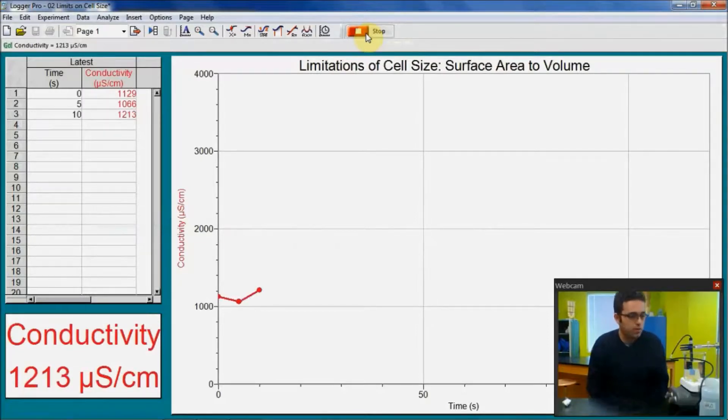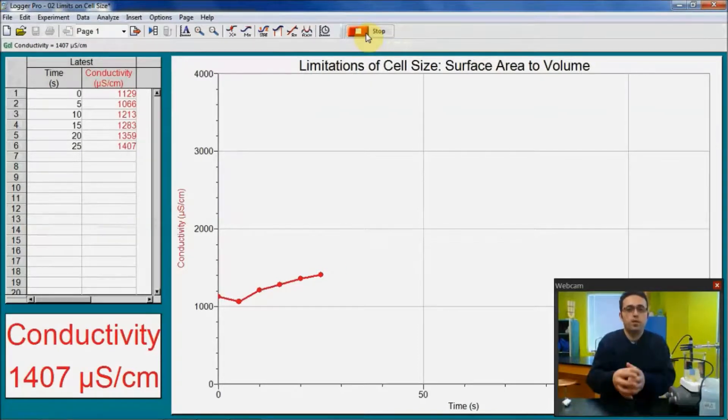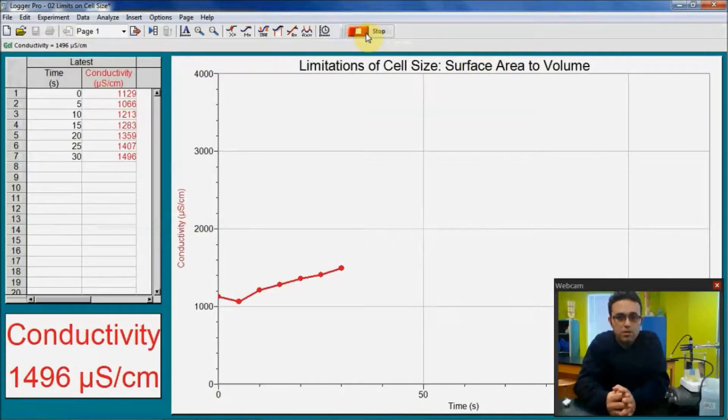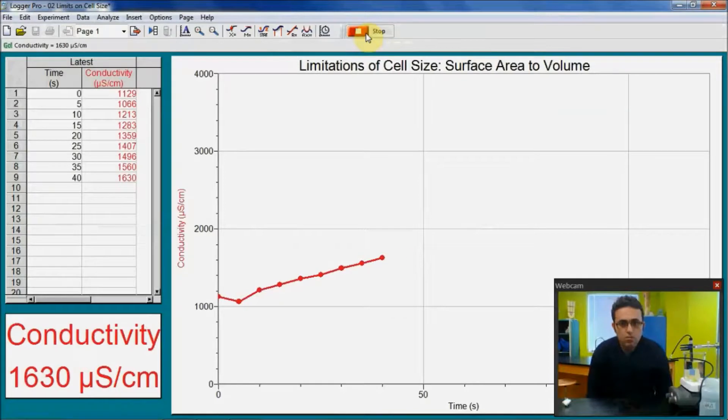The reason we're using this stirrer is to ensure that the salt that is dissolving out to the distilled water is mixed evenly, is distributed evenly throughout the solution. So as you can see, the increase in the ions in the water is pretty linear. There are very small bumps, but it looks very perfectly linear.